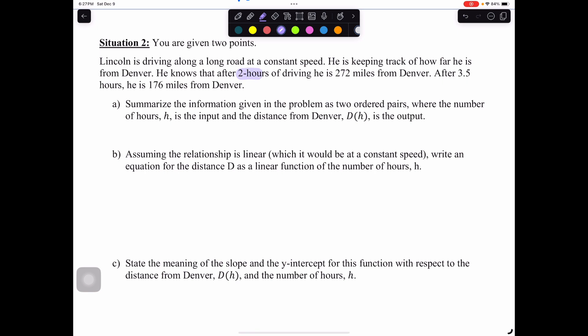You can see by the way that this real world problem was described, they're giving you two snapshots in time. And those snapshots are your coordinates. The first one, two hours of driving 272 miles from Denver is your first coordinate. After three and a half hours, he's 176 miles from Denver is your second coordinate. Whenever the problem is structured like that, it's giving you two points that you can then use to answer questions. Our coordinates would be 2, 272 and 3.5, 176.